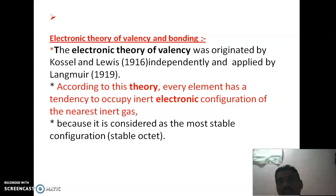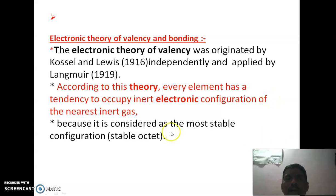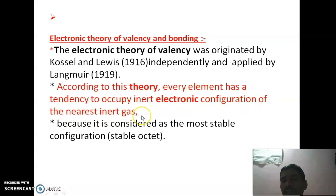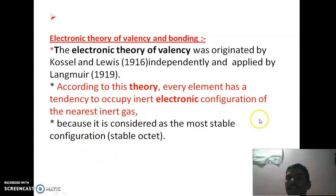The electronic theory of valency is related to stable electronic configuration. This theory was put forward by Kossel and Lewis in 1916 and implemented by Langmuir. According to this theory, every element has a tendency to acquire the inert gas electronic configuration of the nearest inert gas, as it is considered the most stable electronic configuration — the stable octet.